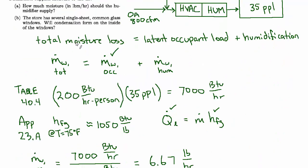And now circling all the way back to our original equation: total moisture loss equals latent occupant load plus humidification. We now know the occupant load, we know the total moisture loss. Let's rearrange this and subtract total minus occupant to find the humidification.